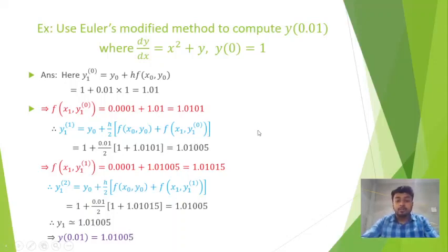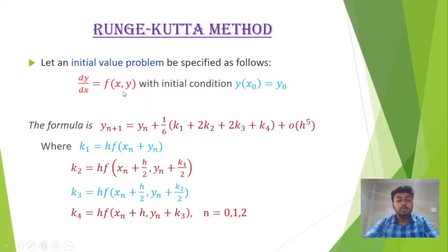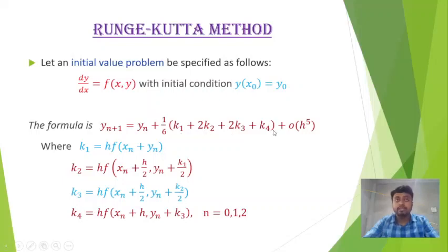This is how we solve a differential equation using Modified Euler's method. Now we discuss the Runge-Kutta method. For the initial value problem dy/dx = f(x, y) with y(x₀) = y₀, the formula for the solution is yₙ₊₁ = yₙ + (1/6)(k₁ + 2k₂ + 2k₃ + k₄) + O(h⁵), where k₁, k₂, k₃, k₄ are defined in the standard manner.